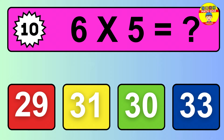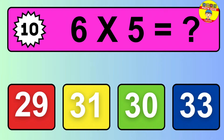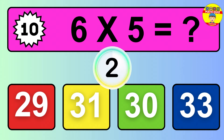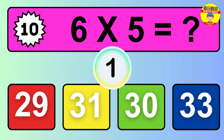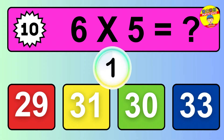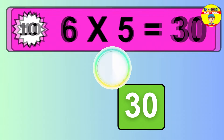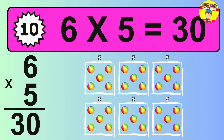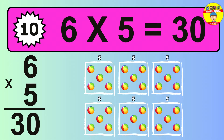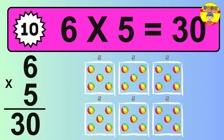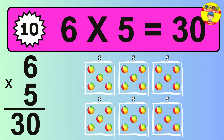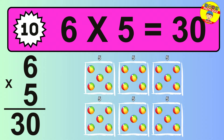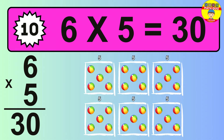Question 10. 6 times 5 equals what? The answer is 6 times 5 is 30. To calculate, we have 6 groups with 5 balls each one. So, how many balls do we have? 30 balls.